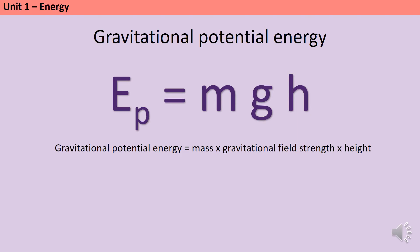So here's our equation. E in physics stands for energy and we use the little subscript p to show that this is potential energy — if you want to just write E then that's fine. The gravitational potential energy that an object gains as it's lifted is its mass multiplied by gravitational field strength — in other words how strong is the pull of gravity wherever it is — multiplied by the height that the object has been lifted to.